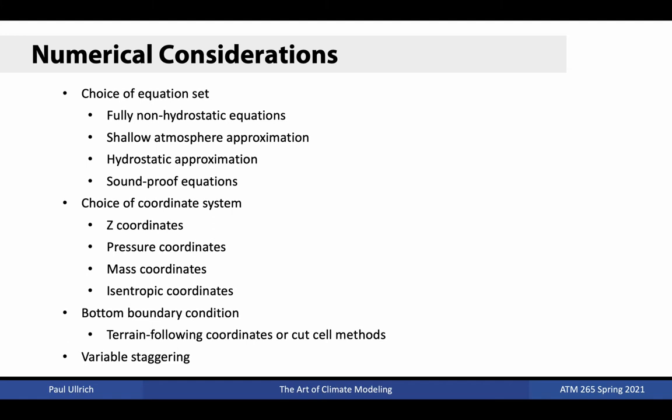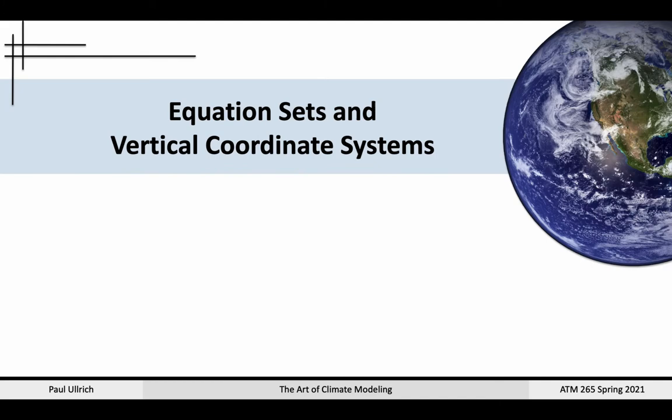With this in mind, there are a number of considerations when designing dynamical cores to properly handle the exchange of information in the vertical. First, there are different equation sets ranging from the unapproximated Navier-Stokes equations to a variety of soundproof equations. Second, there are different coordinate systems in the vertical with implications for discretization and computation. Third, there are several options for the bottom boundary conditions — one can modify the coordinate system to account for topography or allow topography to cut through individual grid cells. Fourth, one needs to worry about whether variables will be staggered in the vertical, and if so, which variables.